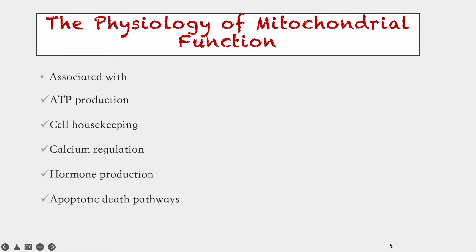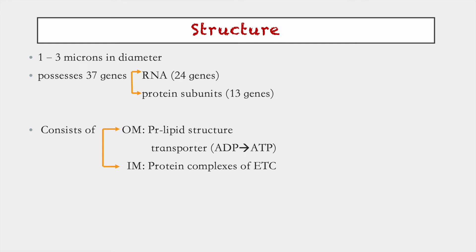Apart from erythrocytes, all other cells contain mitochondria. Mitochondria are associated with ATP production, maintain cell housekeeping, and have other functions like calcium regulation, hormone production, and apoptotic death. Mitochondria are generally 1 to 3 microns in diameter. Their number is greater in heavily metabolic cells like hepatocytes and cardiomyocytes. They possess 37 genes for producing RNA and protein subunits.